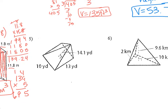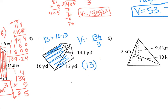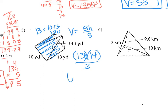Almost done. Number 5 — the base is a rectangle. Area of the base divided by 3: it's 10 times 13, which is 130. Then 130 times the height, which is 14.1 — you can round it down to 14 so we don't have a decimal — and then divide by 3. You should get 606 yards cubed.